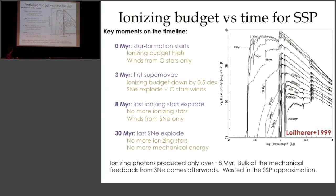This is what you expect from the ionizing population output as a function of time. The wavelength axis is here in log, with the Lyman edge marked and all ionizing fluxes below it. At one megayear your ionizing budget is extremely high — you have all the most massive stars — but you haven't had any time to develop winds yet, so your feedback has not dumped much mechanical energy into the ISM. By about three megayears we've lost half a dex in ionizing energy as the first supernovae go off, and we're still looking at the very top end of the IMF, which is a steep power law, so very few stars are going supernovae.